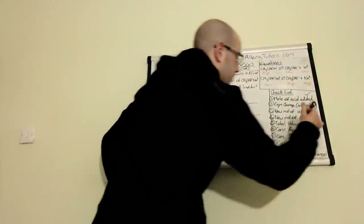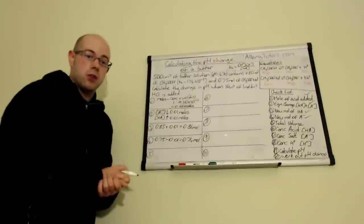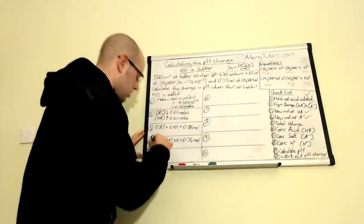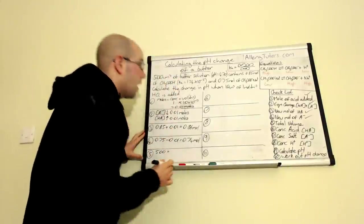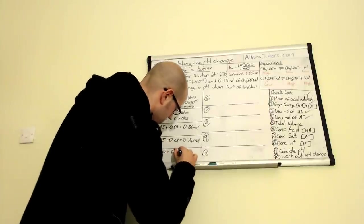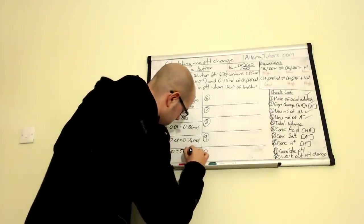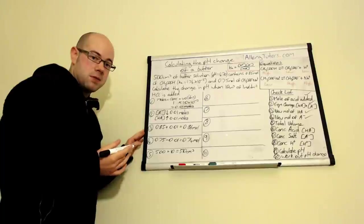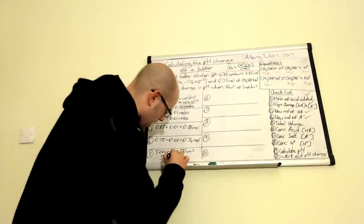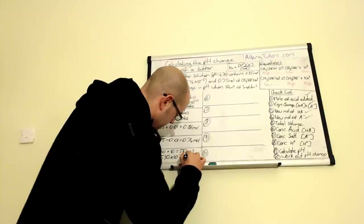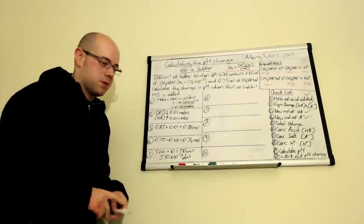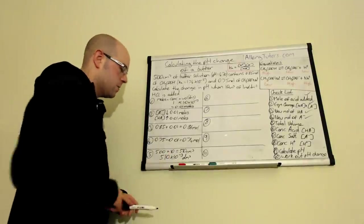Step five is working out the total volume. We've mixed two liquids: 500 cm³ of buffer solution plus 10 cm³ of strong acid gives 510 cm³ total. Converting to dm³ by dividing by 1000: 510 × 10⁻³ dm³. That's our total volume in dm³.